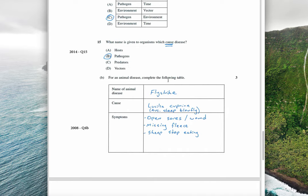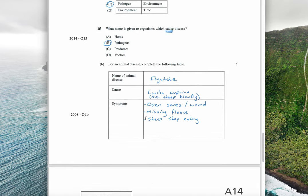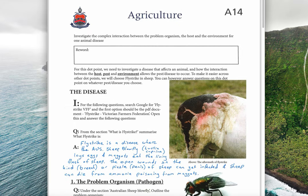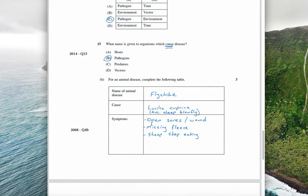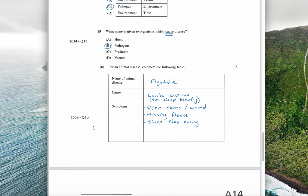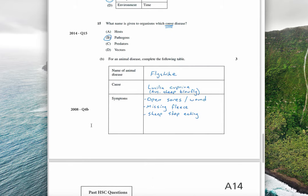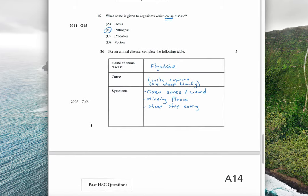In 2008, the question asked to complete a table for an animal disease. The answer: disease is fly strike, cause is Lucilia cuprina — the Australian sheep blowfly. Symptoms of fly strike include open sores or wounds, missing fleece, and the sheep stops eating. Death can result in only a couple of days after a sheep contracts fly strike.